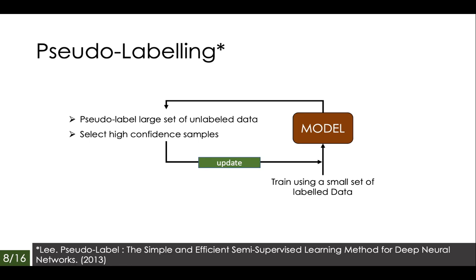Finally, we have pseudo-labeling, which is an interesting procedure that allows us to label large amounts of unlabeled data using a small but good set of labeled data. We train a model using tweets in the source language and use this trained model to pseudo-label tweets in the target language. We then add high-confidence examples from this pseudo-labeled target language to the original training set and retrain the model. From our results, this turns out to be a very effective method.